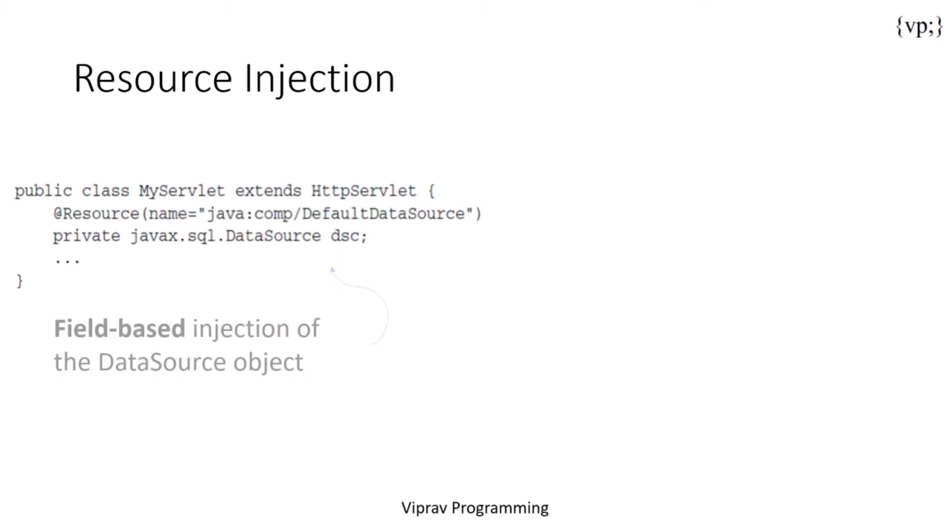So let's take a look at field based injection of the data source. So here you can see that this data source object has an @Resource and it has its JNDI name as default data source.